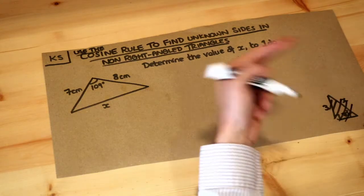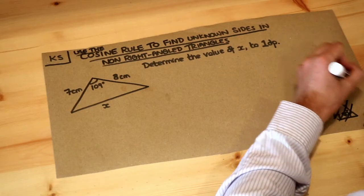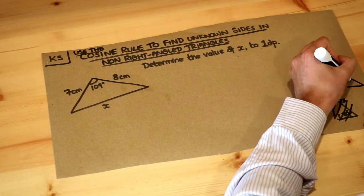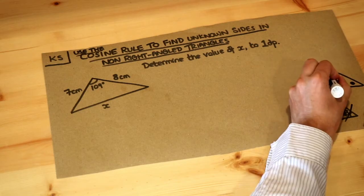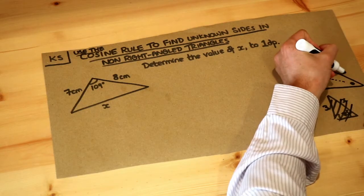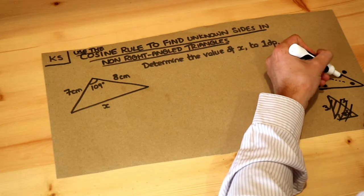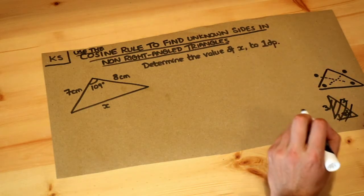Now we previously saw the sine rule in a previous video, and remember how the sine rule worked if you had say a side and an opposite angle, and they were sort of paired together, and another side and an opposite angle, and they were paired together, then you could use the sine rule.